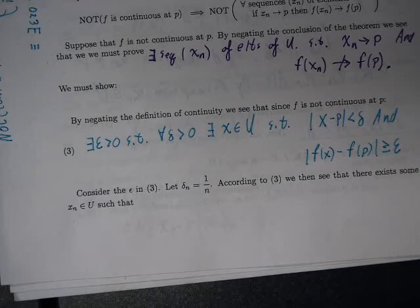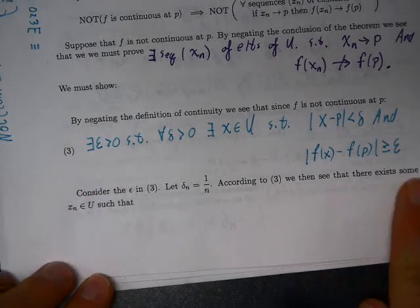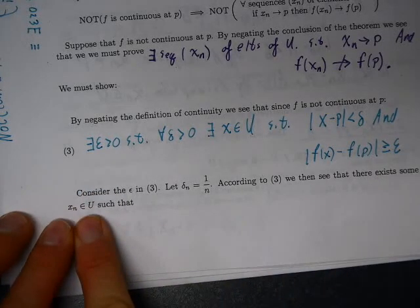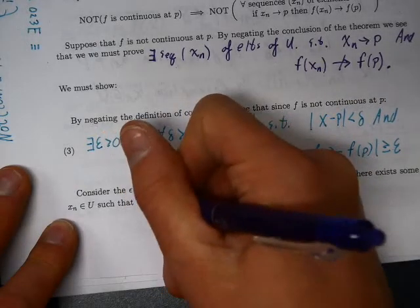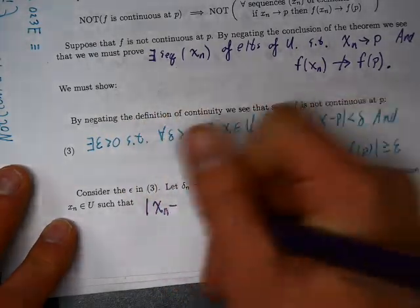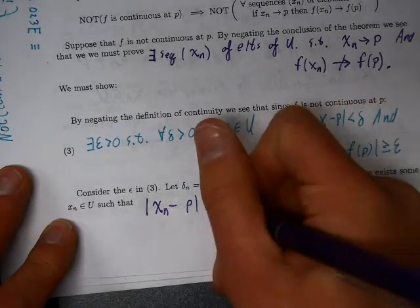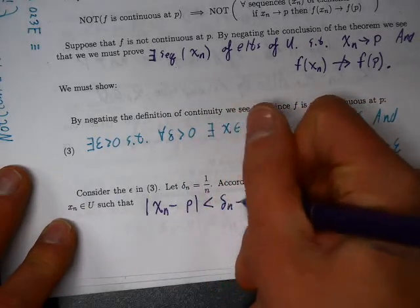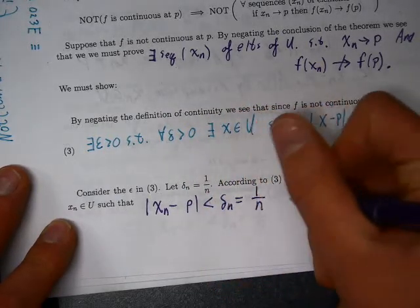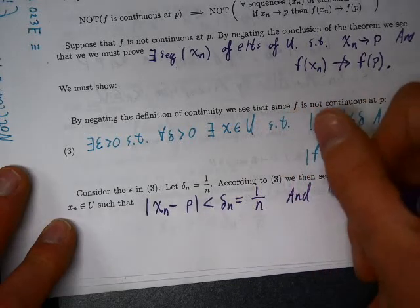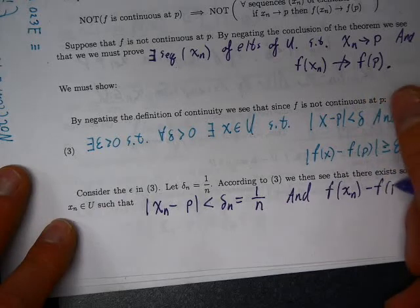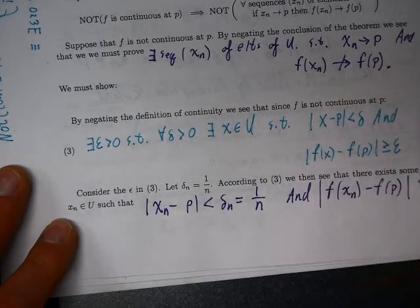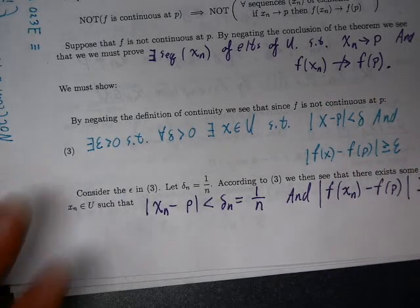According to our negation of continuity, for each delta_n = 1/n, there exists some xn in U such that |xn − p| < delta_n = 1/n, and |f(xn) − f(p)| ≥ epsilon.